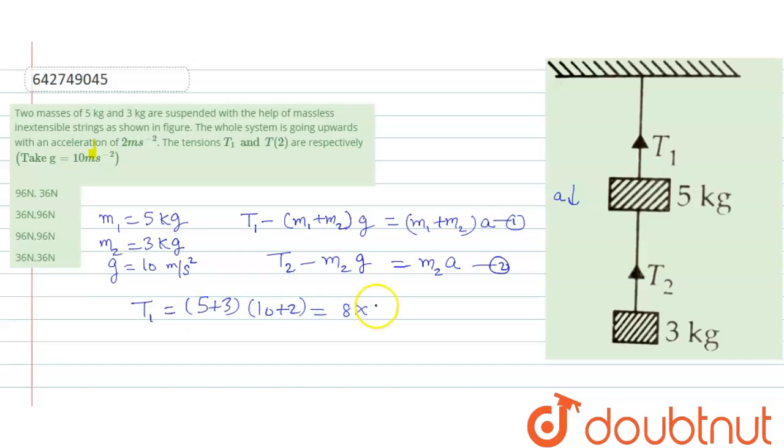That is equal to 36 newton, right. So option T1 and T2, 96 and 36, option one is correct.